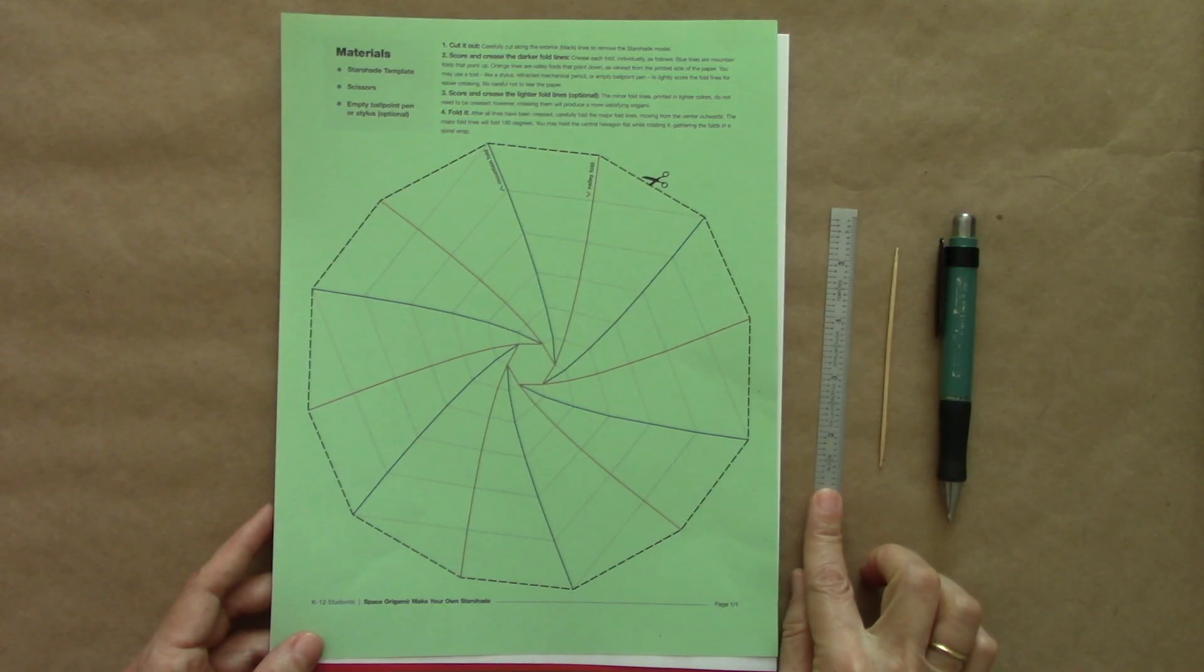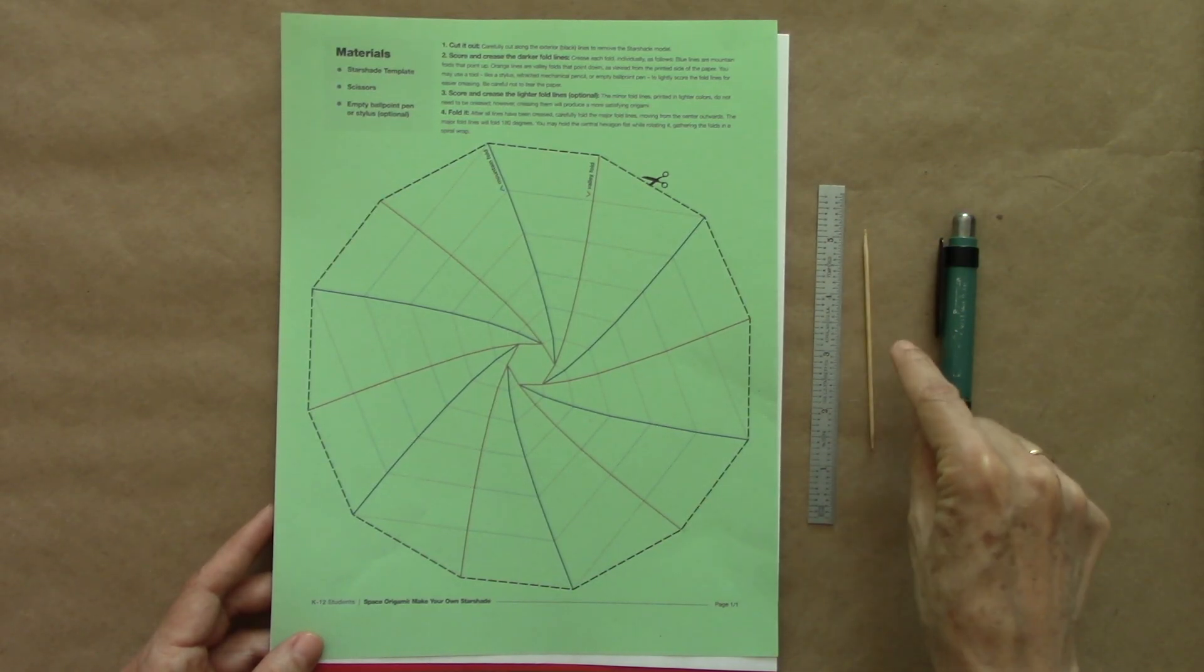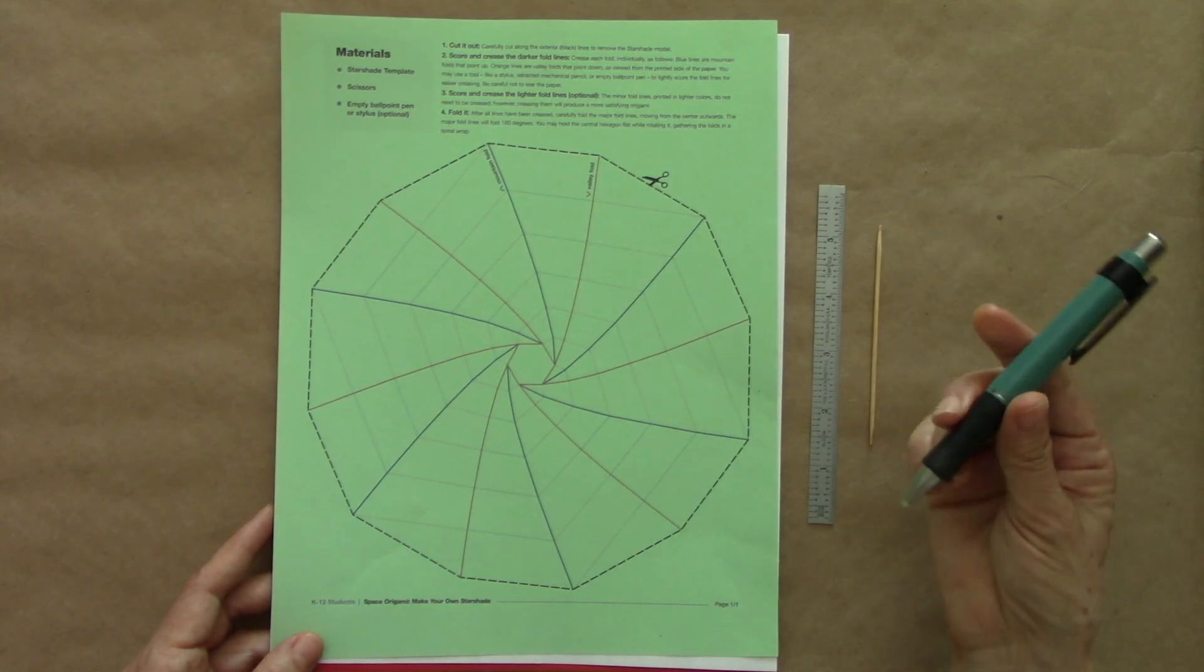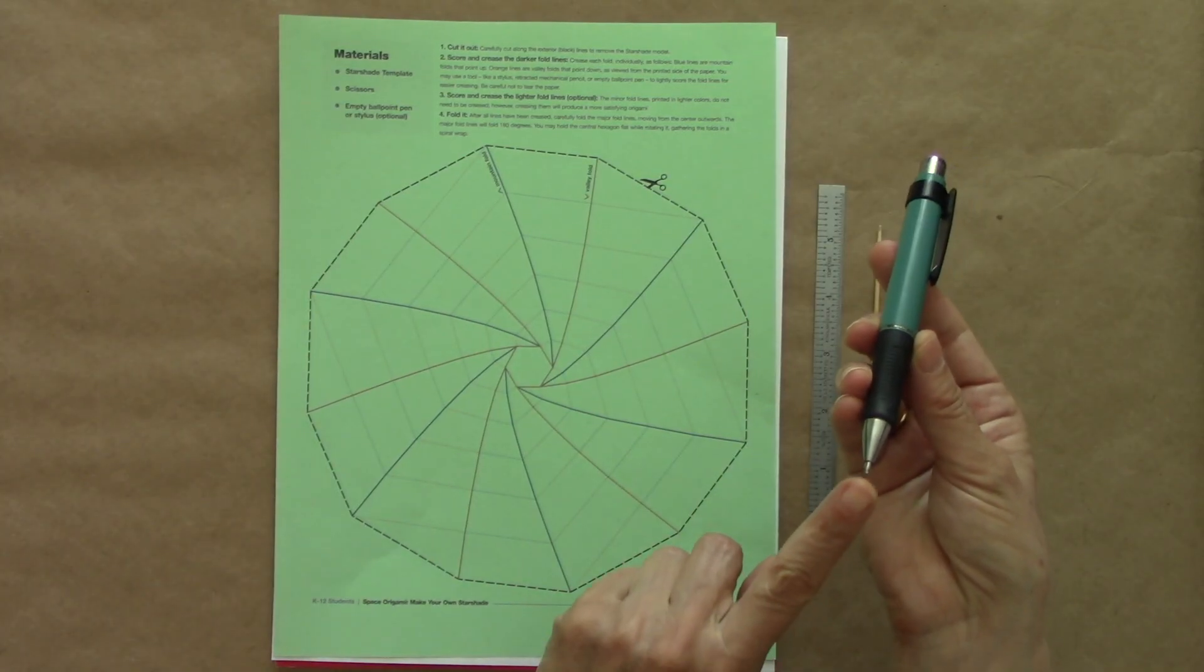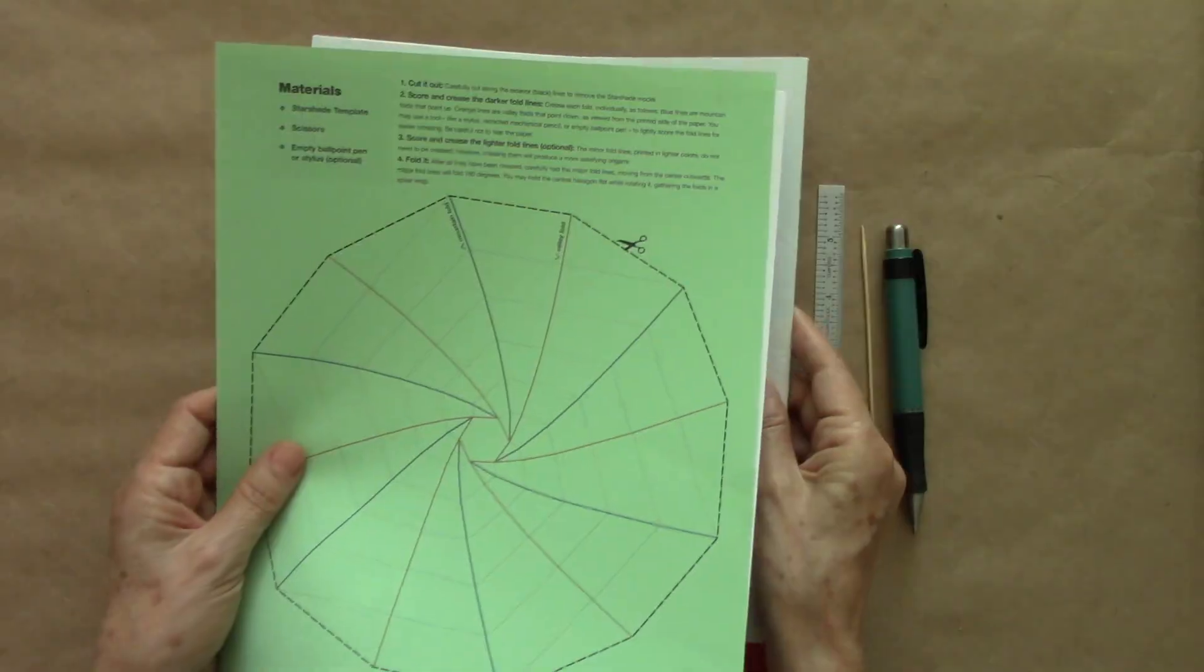We need a small ruler. This is optional, but in my coming handy, a little toothpick and a tool to score with. In this case, I have a pen that does no longer have ink. And also, an old magazine for support.